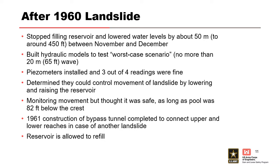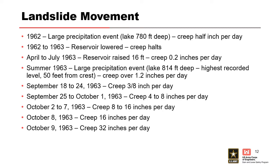Two years later, in 1962, they had a large precipitation event. The lake was around 780 feet deep — right at that threshold they said they shouldn't exceed. They started seeing about a half inch of creep on Mount Toc. So they did what their modeling prescribed: lower the reservoir a little to stop the mountain moving. That worked for 1962 to 1963.